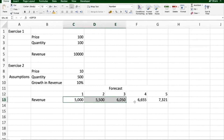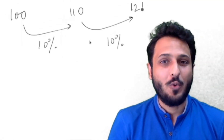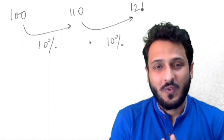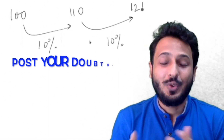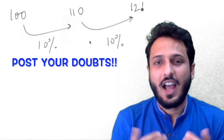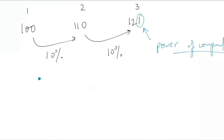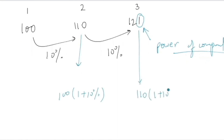Let's understand the power of compounding using simple numbers. You can see 100 growing by 10 percent to 110, and then again 10 percent to 121. You can post your doubts in the comment box and I will personally get back to you. With simple interest, you'd add 10 rupees each time: 100 → 110 → 120. But here it's 121 — there is one rupee extra, and that is the power of compounding. This is nothing but 100 into (1 + 10 percent).